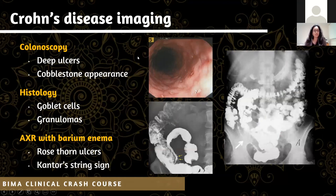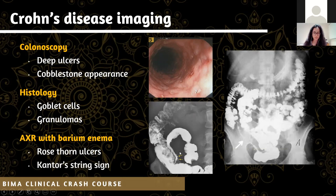On imaging for Crohn's disease: colonoscopy shows deep ulcers and a cobblestone appearance - you can see all the bumps along the GI tract. Histology shows goblet cells and granulomas. A barium enema X-ray will show rose thorn ulcers, visible where the yellow arrows point. On the right image, a thin line called Cantor's string sign is visible, and that is very specific to Crohn's disease.